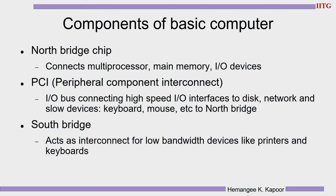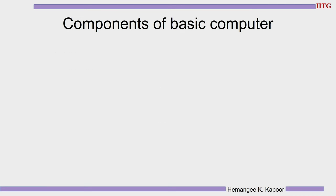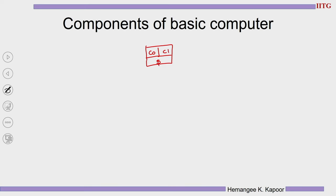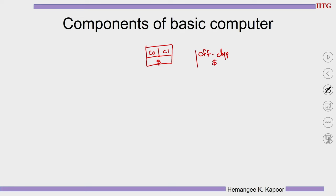What are the basic components of a computer? There is a processor, a north bridge chip, a PCI chip and so on. We normally have a processor — single core or multi-core — with two cores, core 0 and core 1, sharing a cache. The cache is popularly denoted by the dollar symbol. Both cores can also use an off-chip cache connected to this system.